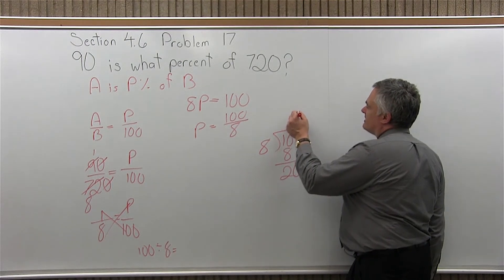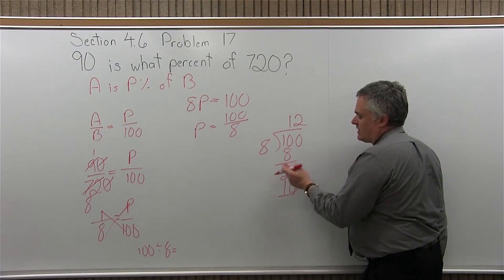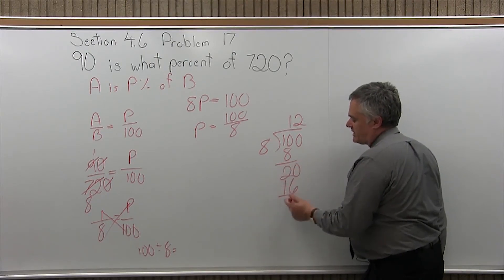8 divides into 20. Well, as close as you get is times 2. 2 times 8 is 16. So, it did not go in evenly. That's all right. You have a remainder. 20 minus 16 is 4.